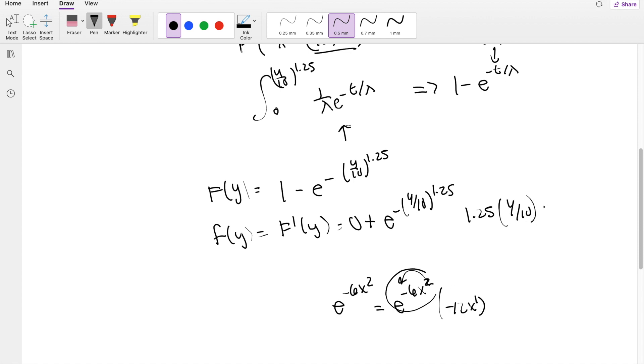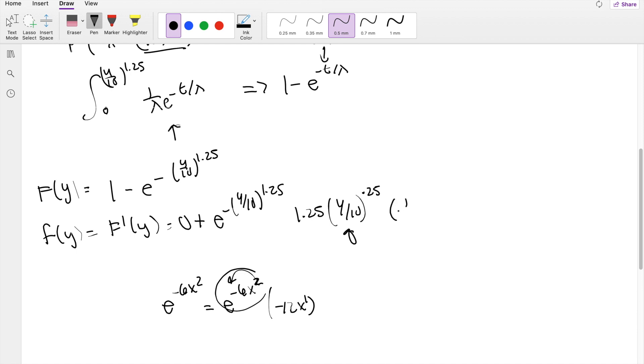And you drop the exponent by minus 1. It went from 2 to 1. So that's going to be 0.25 times the chain of the inside here. So that's going to be just 1 over 10.